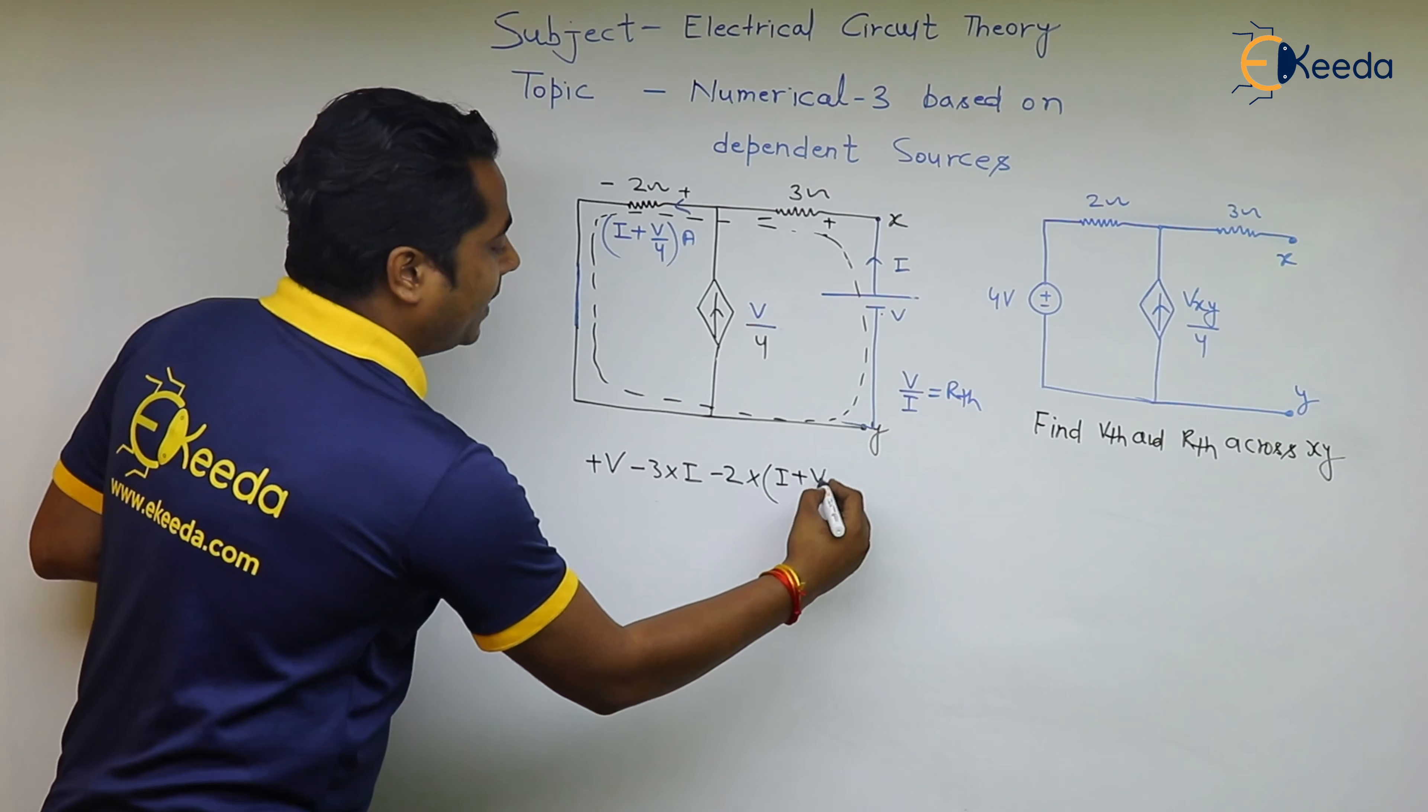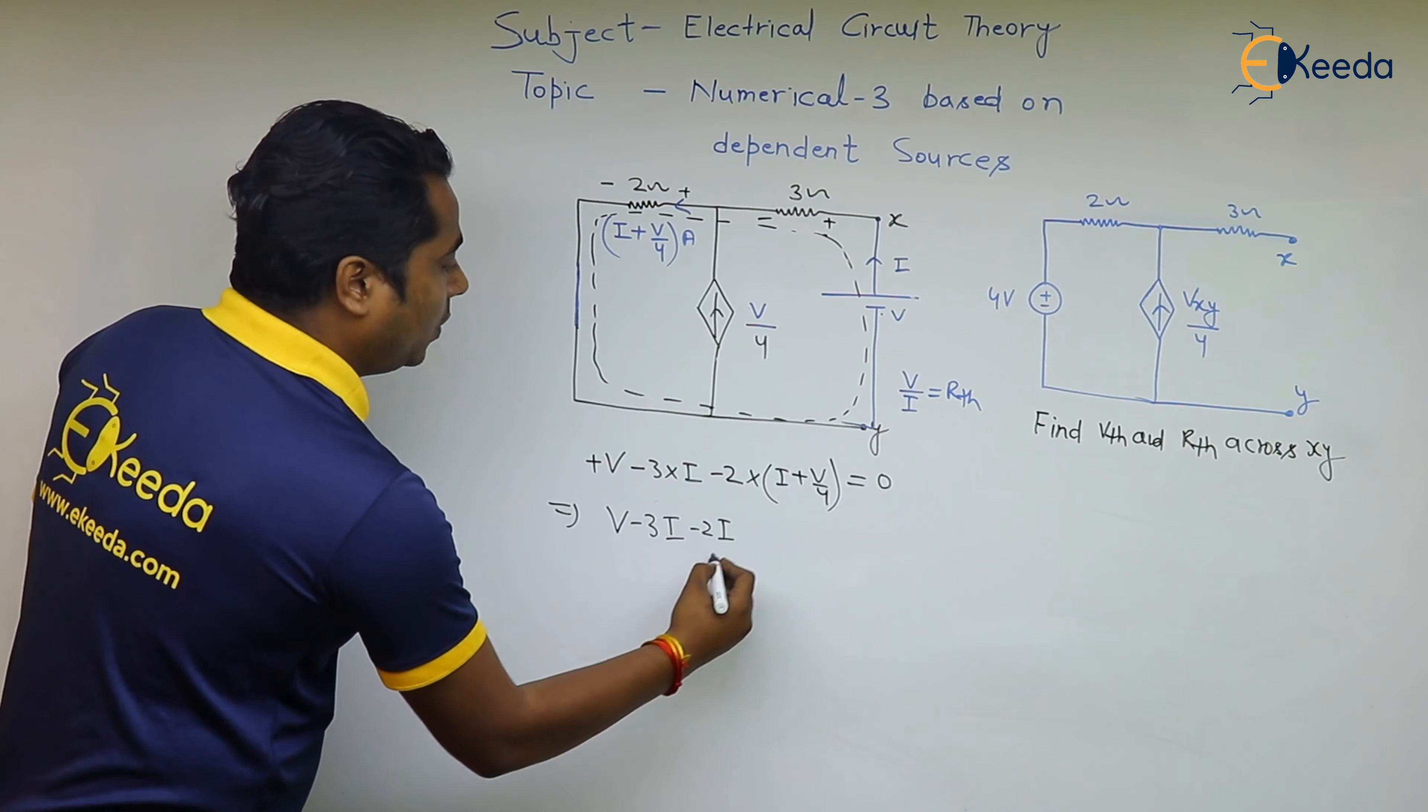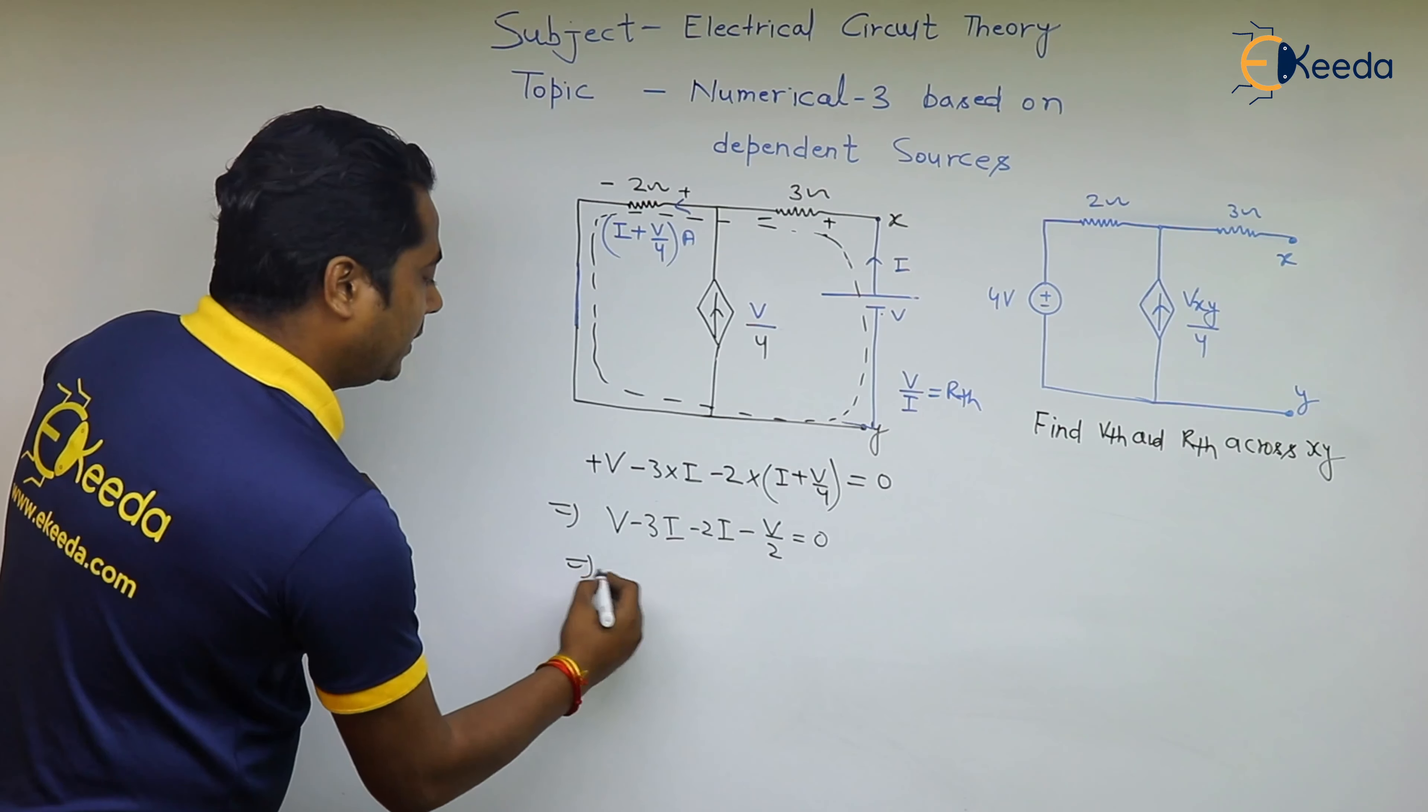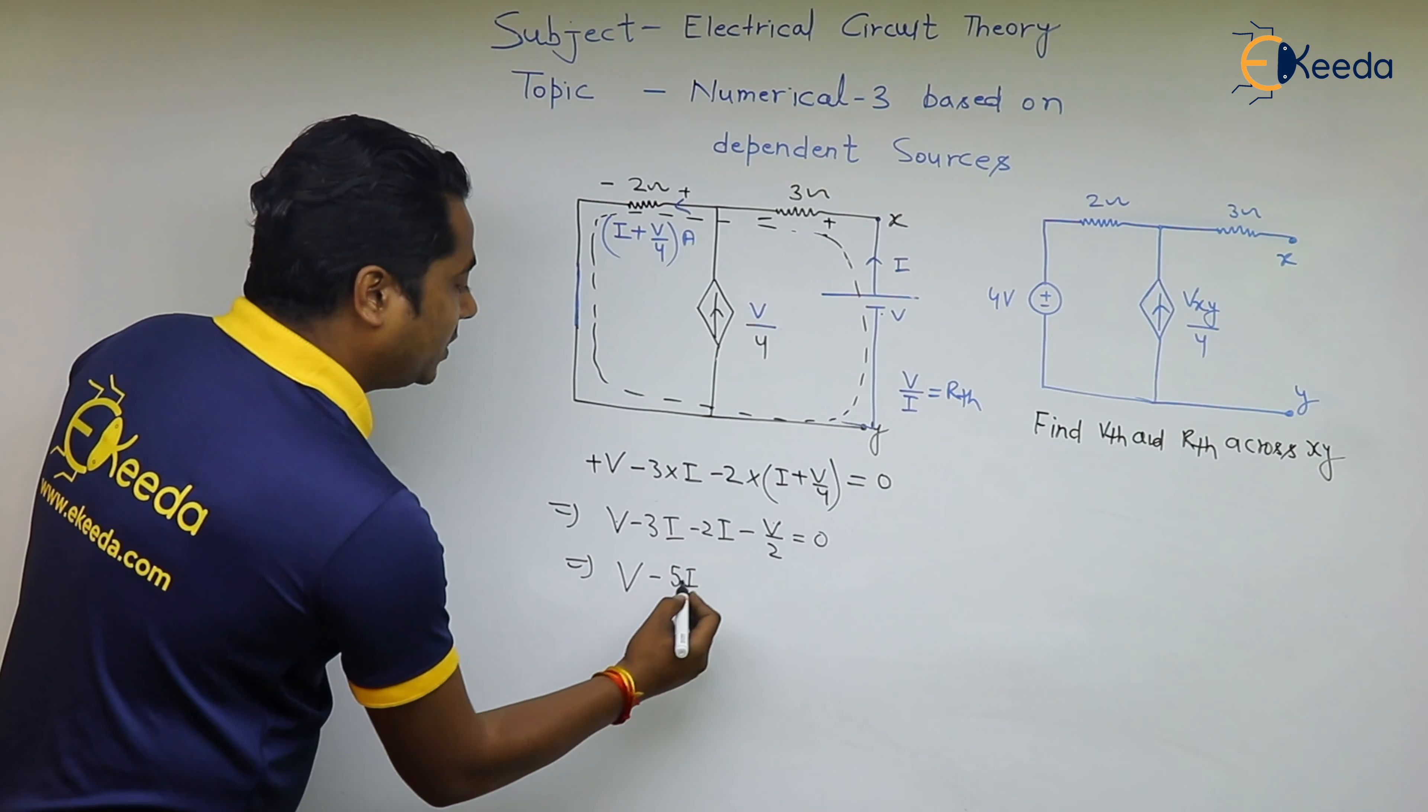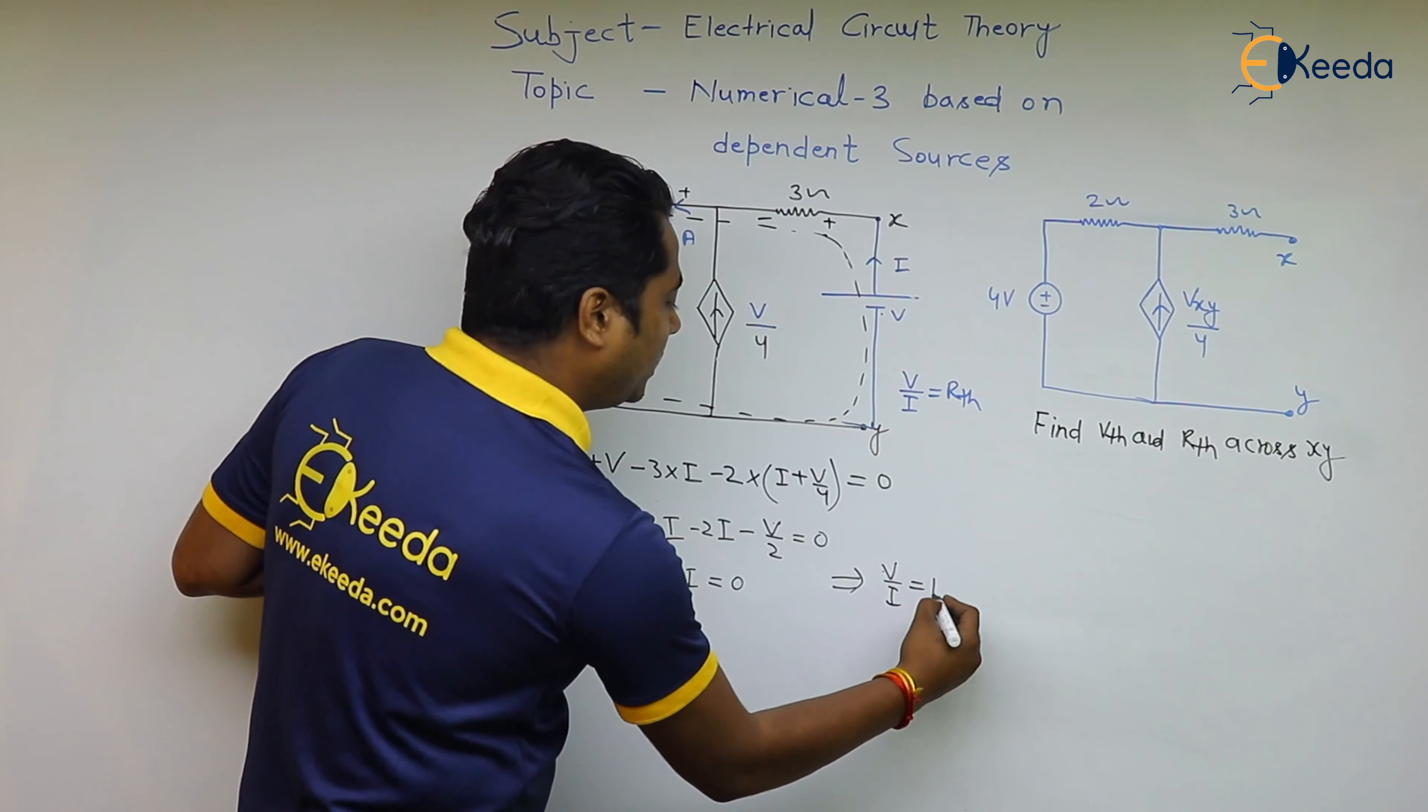V by 4 is equal to 0. Now V minus 3i minus 2i minus V by 2 is equal to 0. V minus V by 2 is equal to V by 2. 5i is equal to V by 2. We can write from here V by I is equal to 10 ohm.